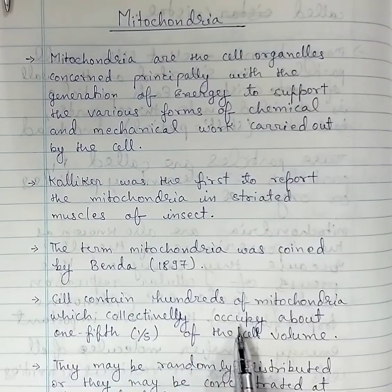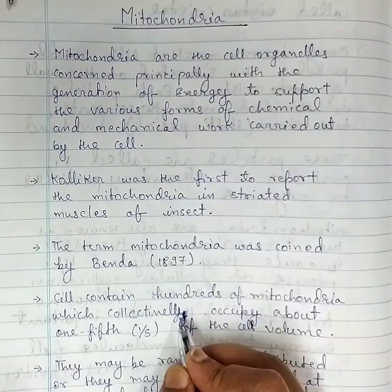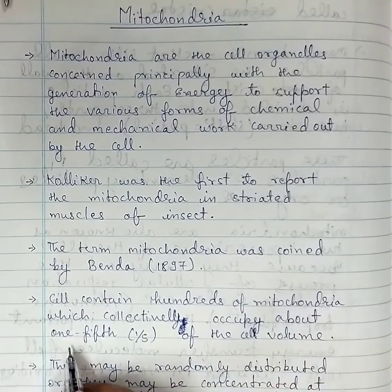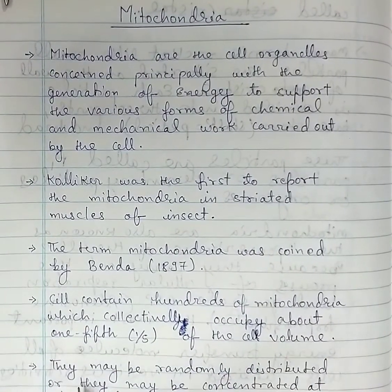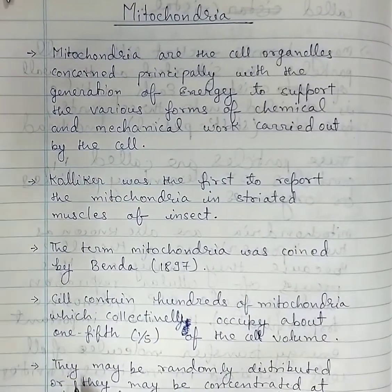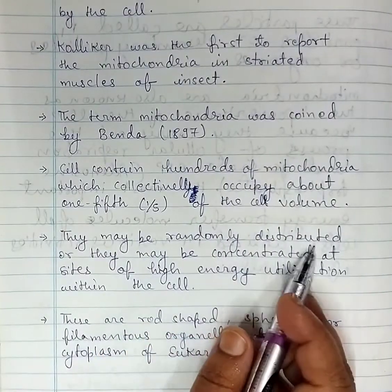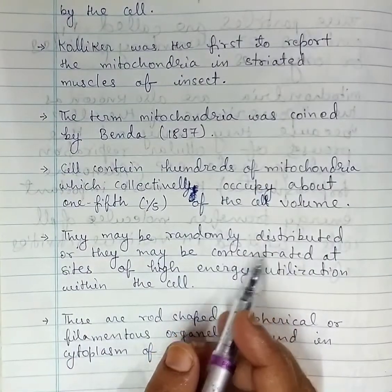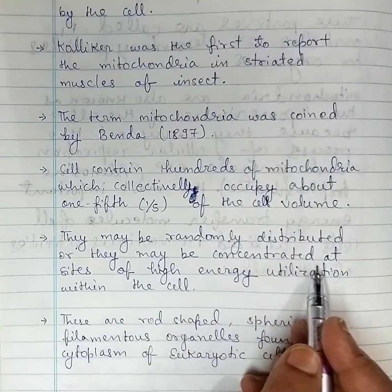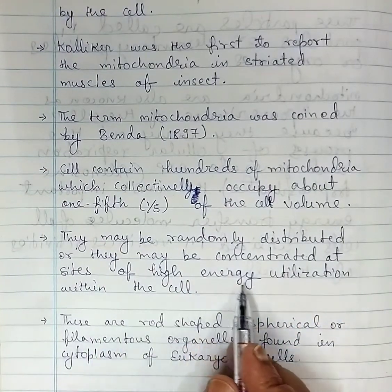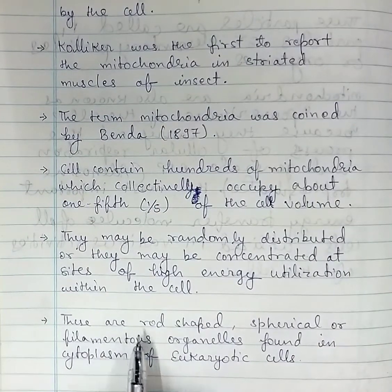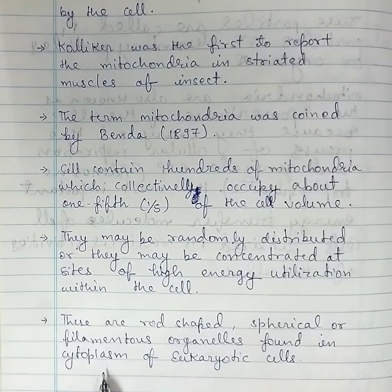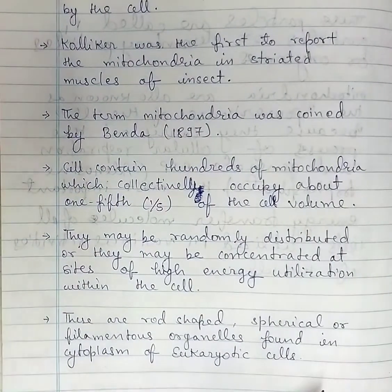Cells contain hundreds of mitochondria which collectively occupy about one-fifth of the cell volume. They may be randomly distributed, or they may be concentrated at sites of high energy utilization within the cell. These are rod-shaped, spherical, or filamentous organelles found in the cytoplasm of eukaryotic cells.